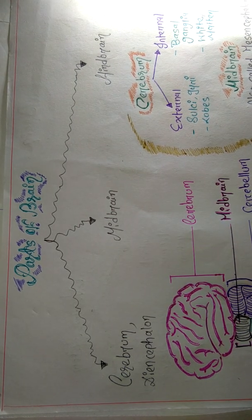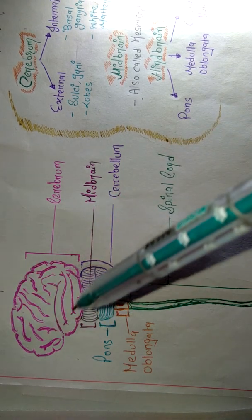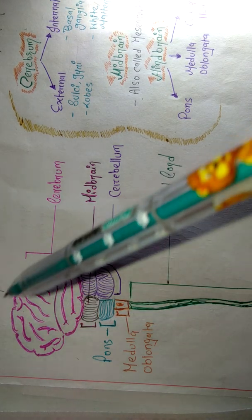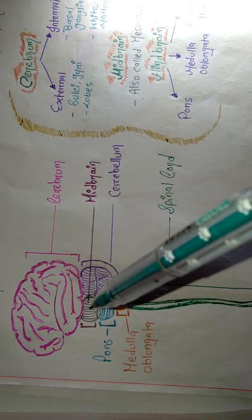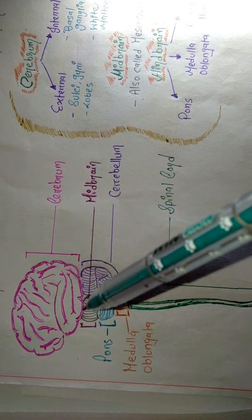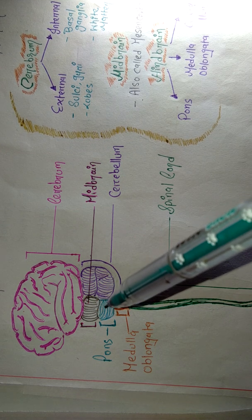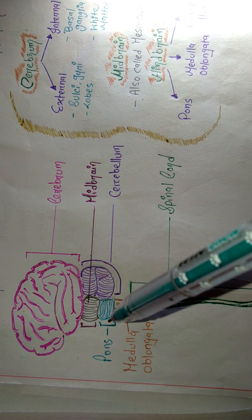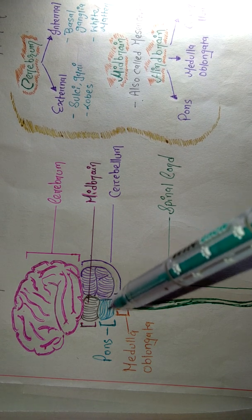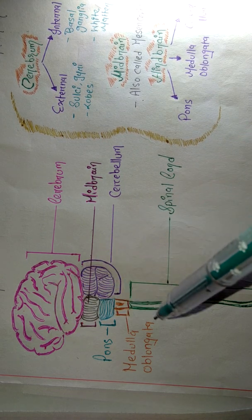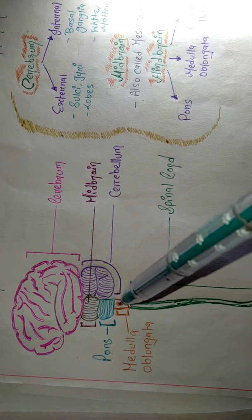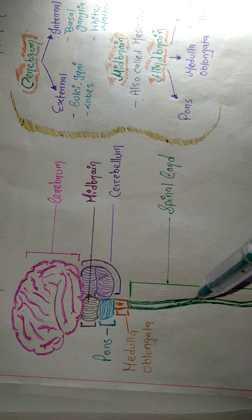Let me show you the diagram. This is the cerebrum — the biggest portion of the brain, which looks like an egg. Just below the cerebrum we have the midbrain, shown as the black portion. Just below the midbrain we have the pons, shown here in sky blue color — I've colored it to make the parts more clear. Just below the pons we have the medulla oblongata, shown in orange.